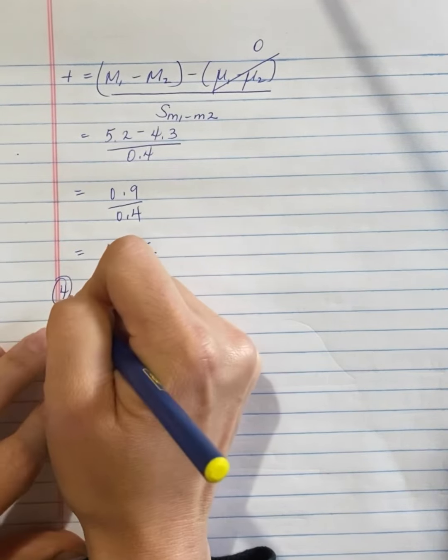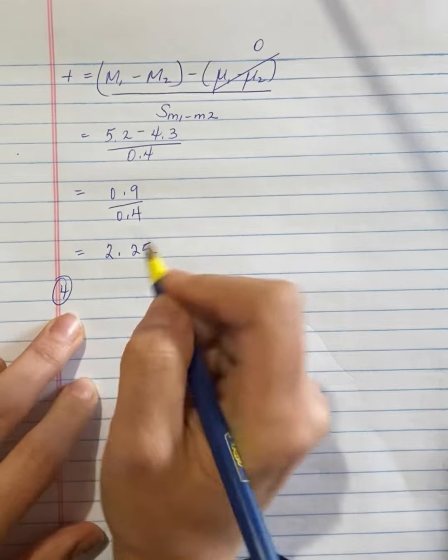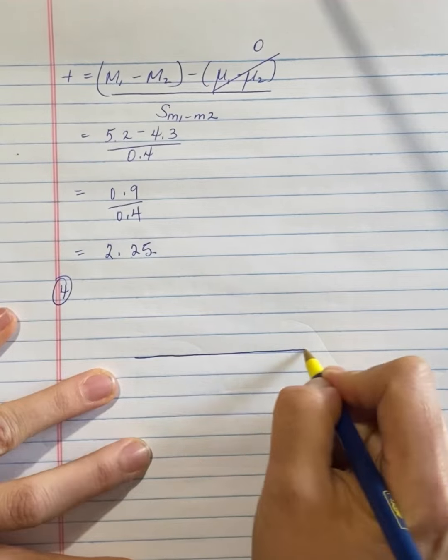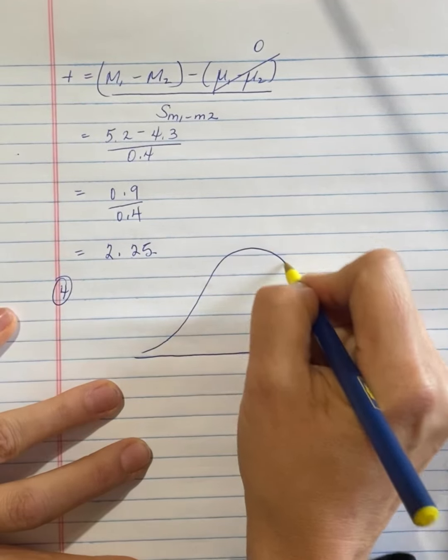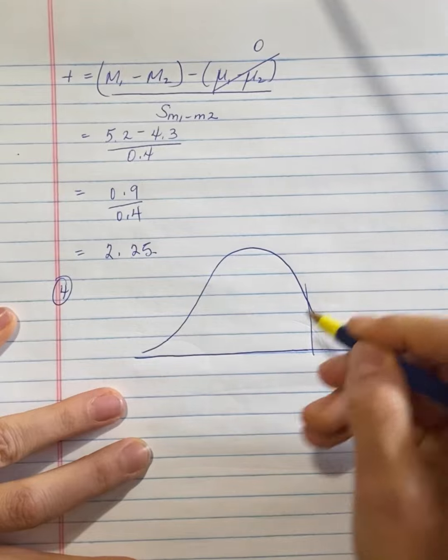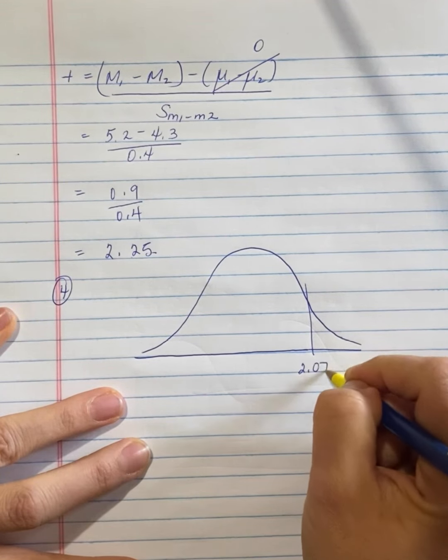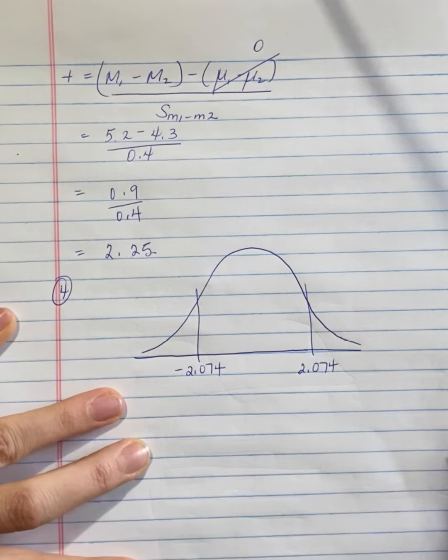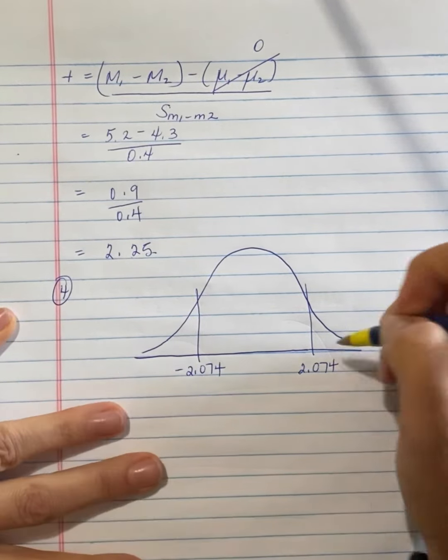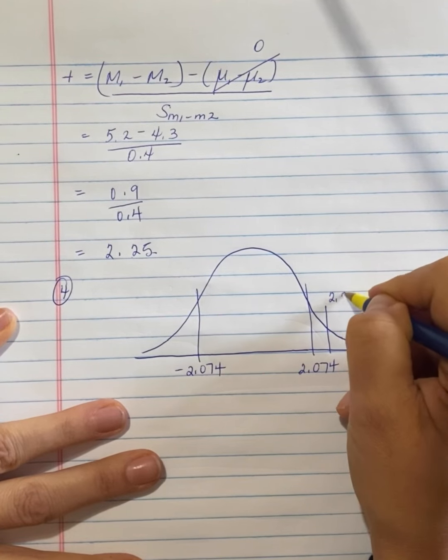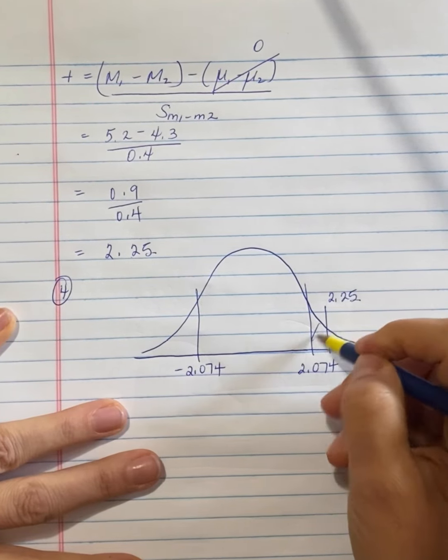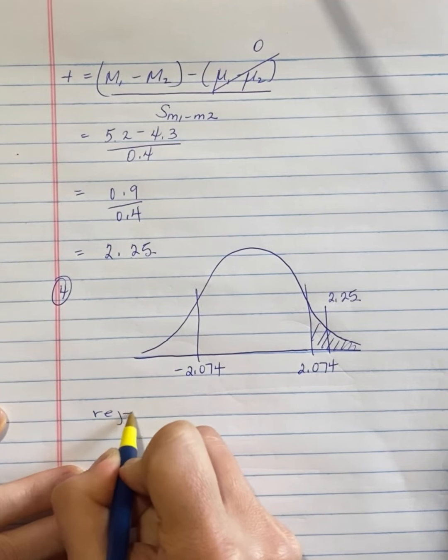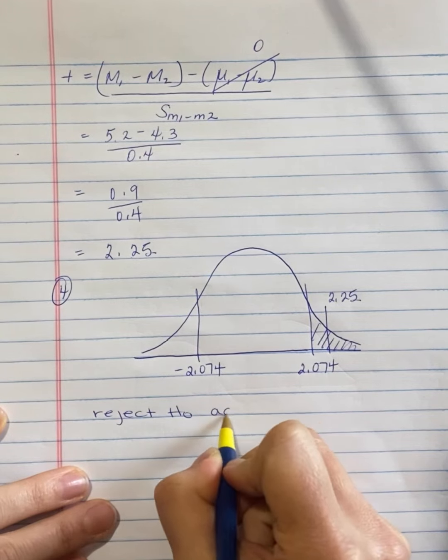Then step 4 of the hypothesis testing procedure, we're going to compare this value to our critical values. And I'm just going to copy that distribution over that I drew in step 2. And I'm going to put this value on here, 2.25. It falls in this critical region. So we are going to reject the null and accept the alternate.